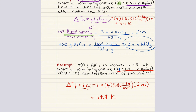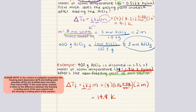We haven't answered the problem yet — we're asked for the new freezing point. The normal freezing point of water is 273 Kelvin. The freezing point is depressed by about 14.9 Kelvin, so the new freezing point is 273 minus 14.9 Kelvin, giving us approximately 258 Kelvin. This is our new freezing point for this solution.